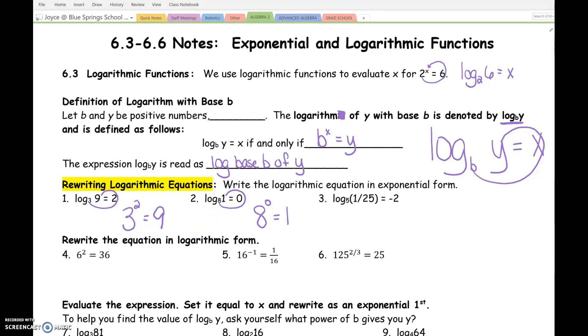Try number three on your own. Start at the five. Woo! Five raised to the negative two equals one over 25.